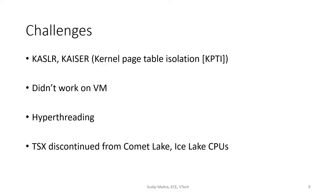Kernel address space layout randomization, or KASLR, randomizes the kernel start address for each reboot. Although it's not difficult to overcome, I disabled it from the grub menu to get the best chance of success.